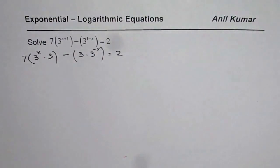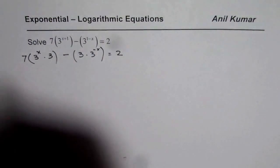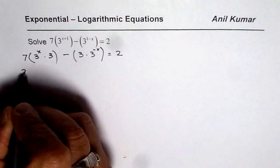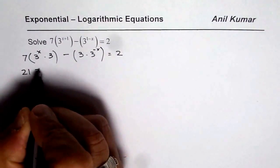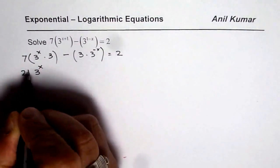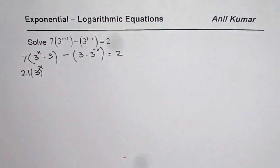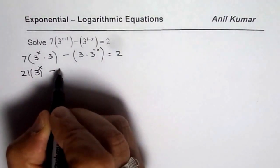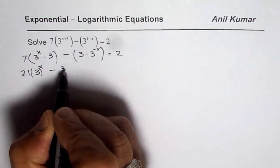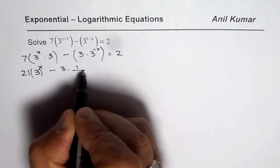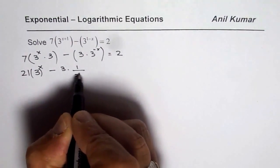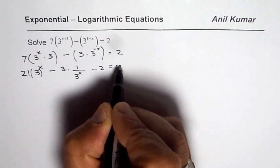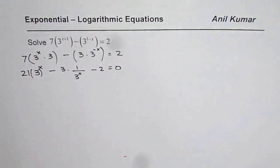Let me rewrite this. So we get 7 times 3 is 21, so I can write this as 21 times 3 to the power of x, minus 3 times 1 over 3 to the power of x. Let us bring 2 to this side, so we get minus 2 equals to 0.